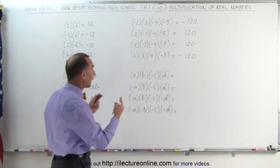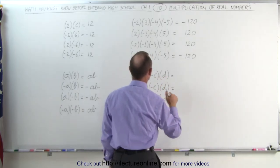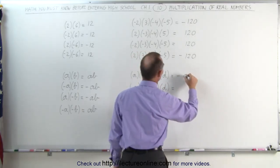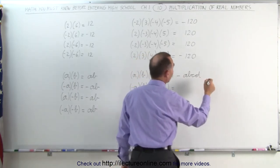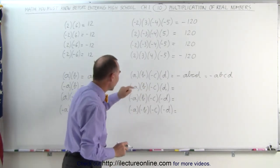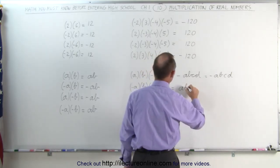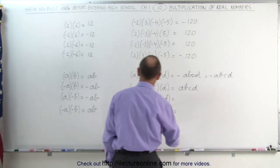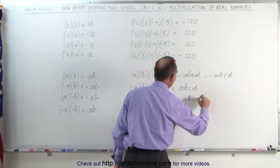It doesn't matter if they're numbers or letters representing numbers. Here notice there's only one negative sign — they're all multiplied together, so this becomes minus abcd. Notice when you multiply them together you can write them all together, or written out it's equal to minus abcd. When there are two negative signs, two negative signs multiplied together give you a positive, so this is abcd. Here when there are three negative signs, that makes this negative again — negative abcd.